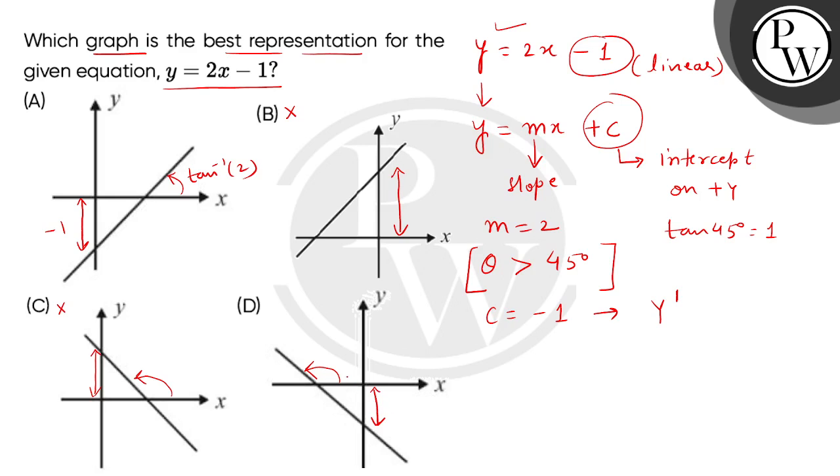The intercept should be on the negative y-axis, but in some graphs the intercept is on the negative x-axis instead. Because these angles are obtuse, we will reject both graphs, and the correct answer will be option A.